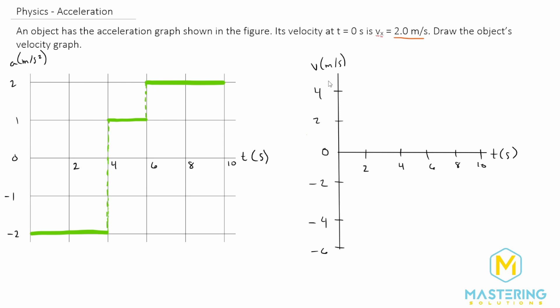So I've drawn our velocity versus time graph for us already and they tell us that they start off at 2 meters per second. So we start right here at time of zero. For an acceleration versus time graph to go down to a velocity versus time graph, we find the area underneath the curve.